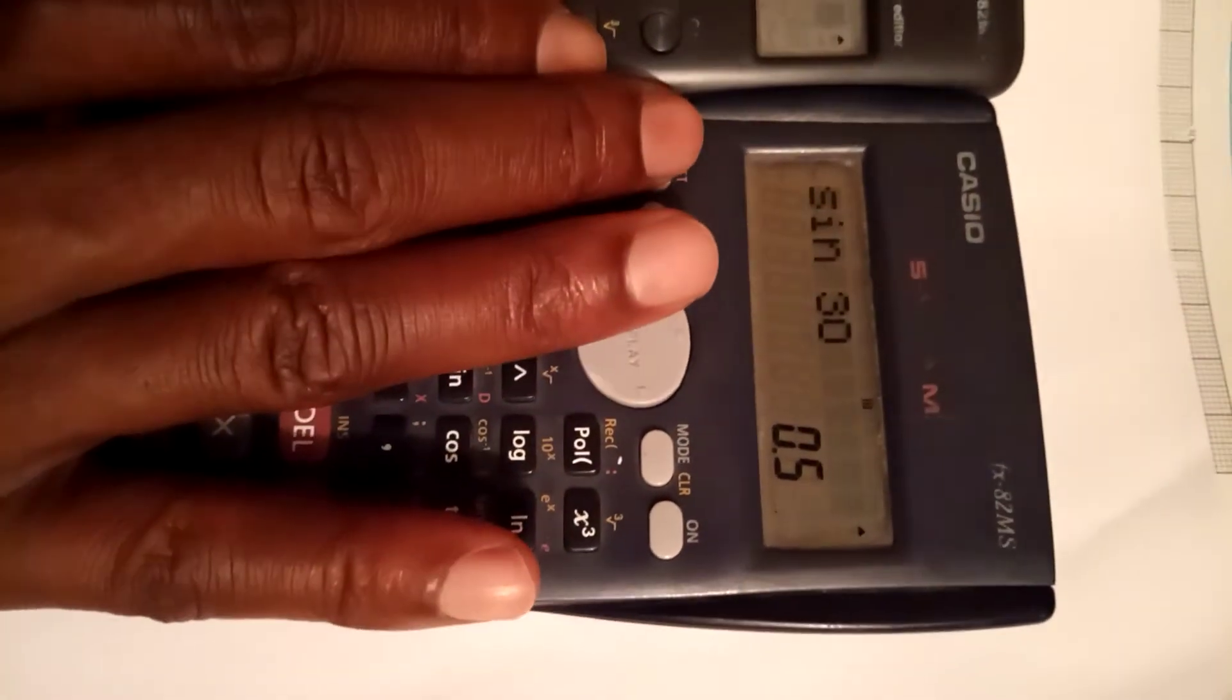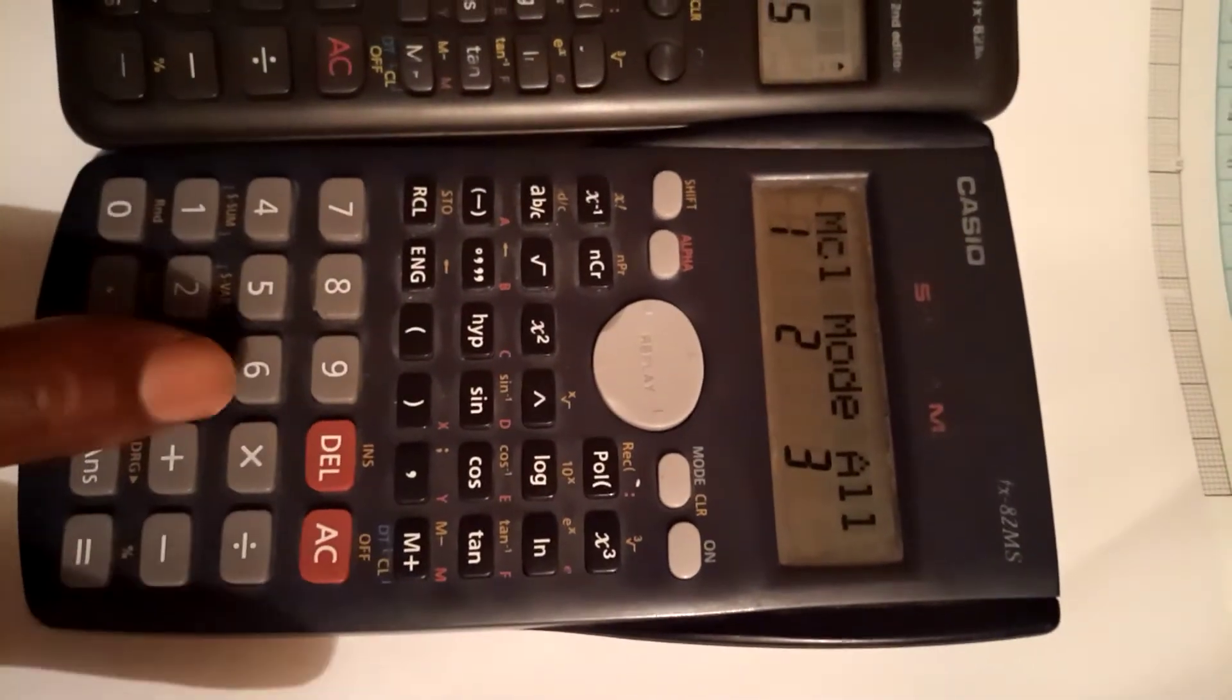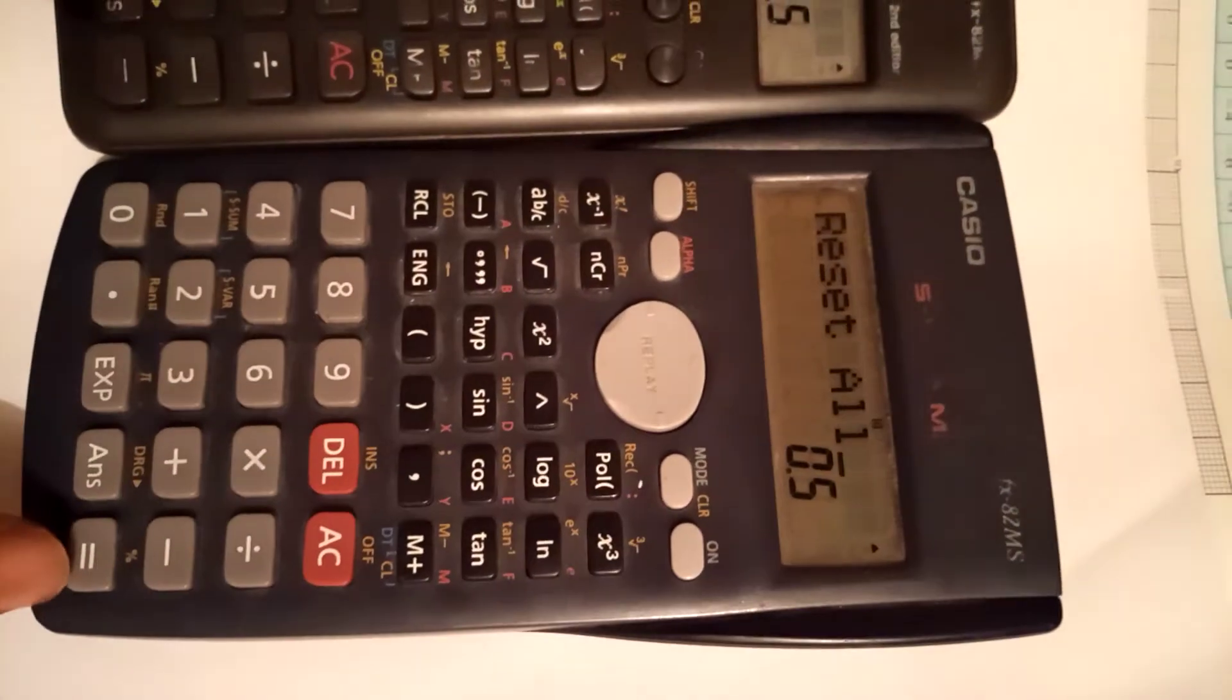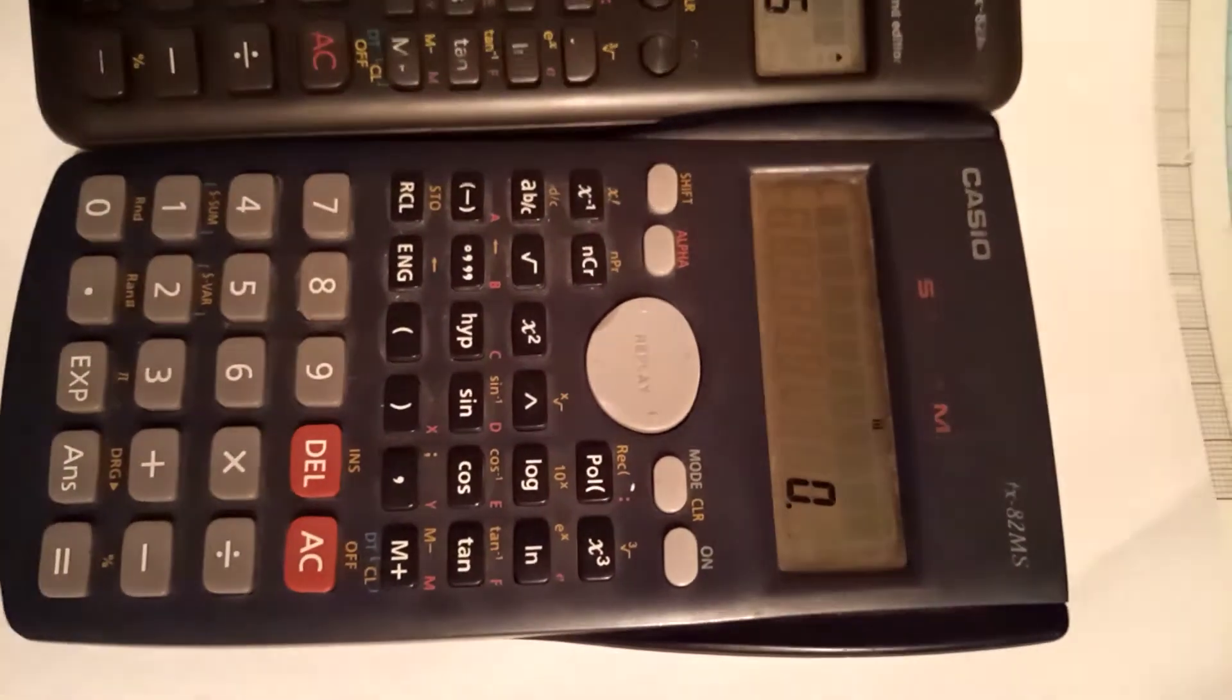I'll show you again. To reset you press shift, mode, then option three, then you press equals until you have a zero. So that is a calculator that is reset.